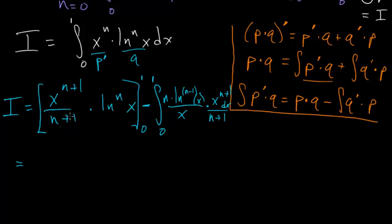The outside expression is evaluated between 0 and 1. Plugging in 1 gives ln(1) = 0, making the entire expression 0. At x = 0 we take a limit, since ln(x) goes to minus infinity, but because the natural log grows much slower than x to any power, this expression goes to 0 much faster. So the entire boundary term evaluates to 0.